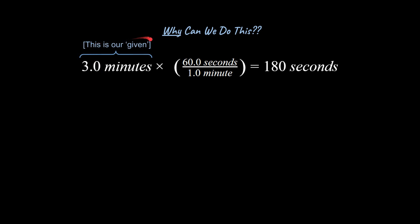So you start with three minutes. This is what's called our given. Usually we just say it's our given value in the problem. The given value is just some value with units that you are starting with that is given to you in the problem. And you're going to convert out of this.